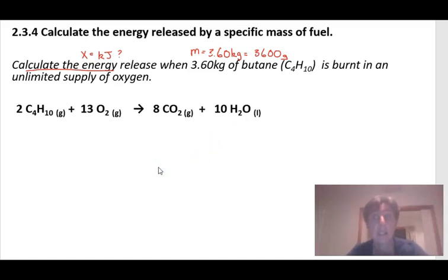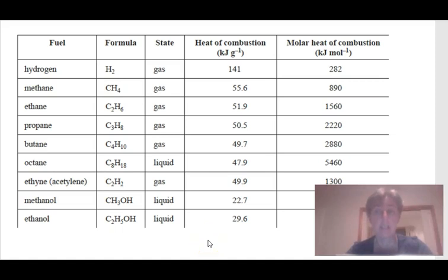In the data booklet. So here we are in the data booklet and butane makes two thousand eight hundred and eighty kilojoules per mole. So you need to write a thermochemical equation with two thousand eight hundred and eighty.